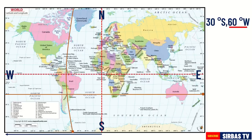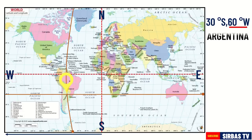The point where the horizontal and vertical lines intersect is the place that we are looking for. The country that is located on the coordinates 30 degrees south and 60 degrees west is Argentina.